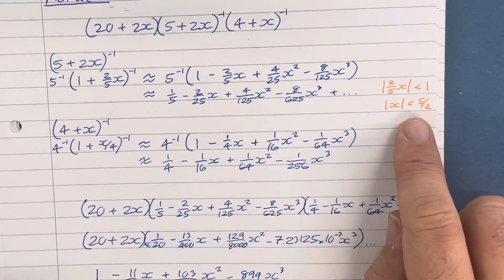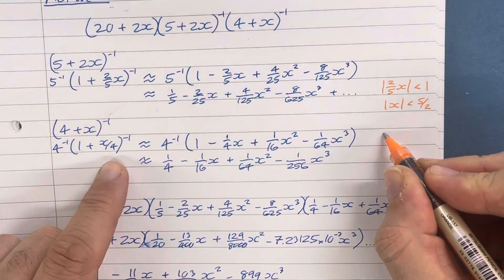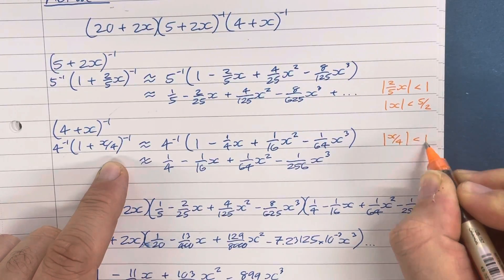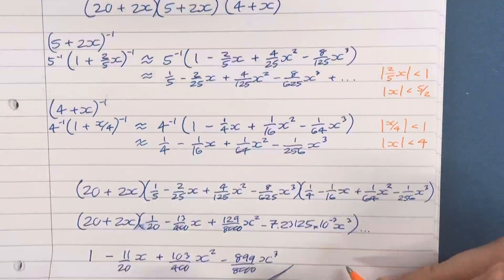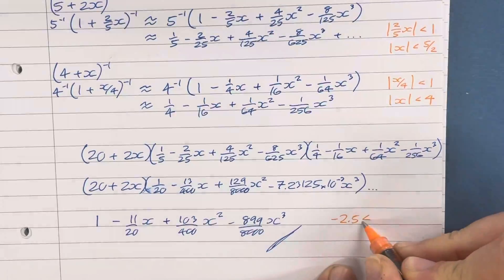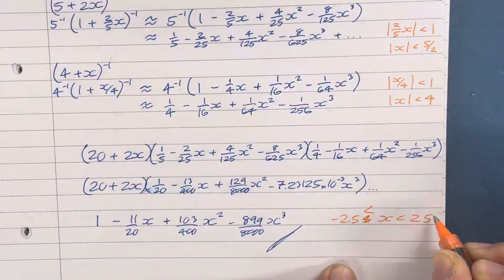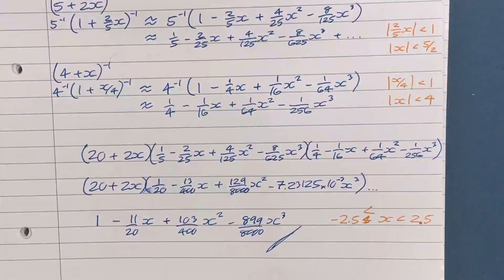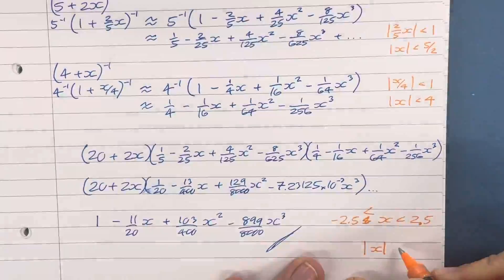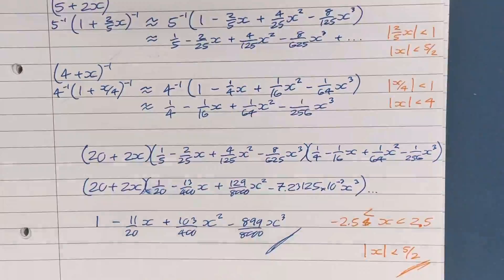The first expansion was valid for |x| < 5/2 and the second for |x| < 4. The most restrictive is |x| < 5/2, so the overall expansion is valid for -5/2 < x < 5/2 (not including the bounds), or equivalently |x| < 5/2.